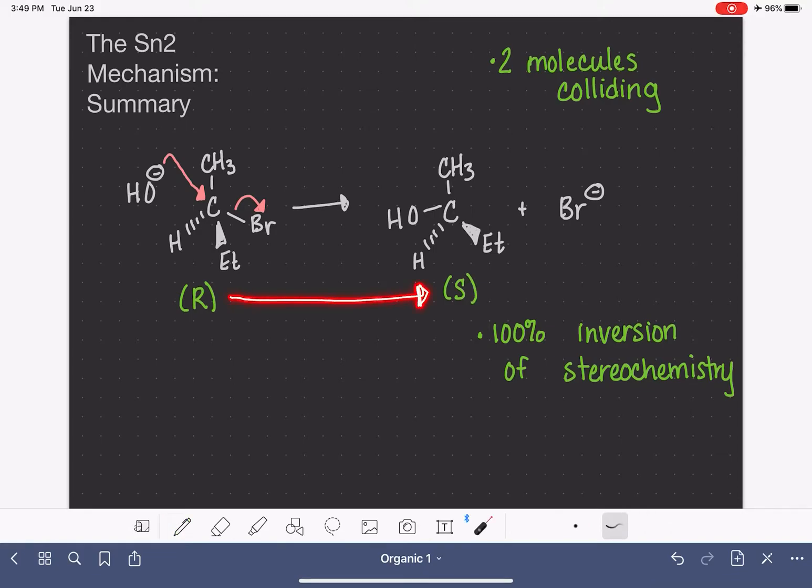And we have an exclusive and complete inversion from R stereochemistry into S stereochemistry. So it is impossible for us to convert R into another R or S into an S. It's 100% R turning into S or S turning into R.